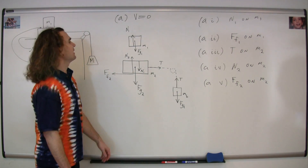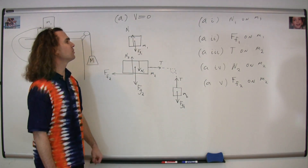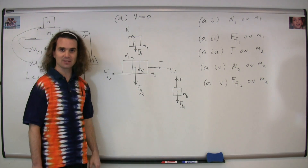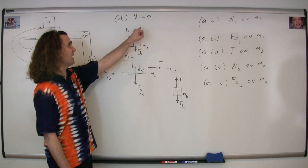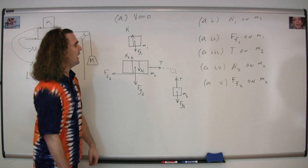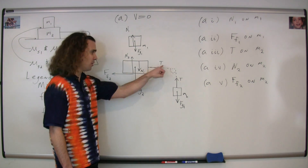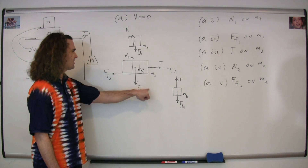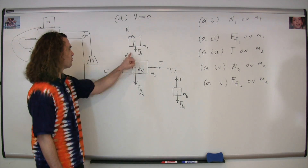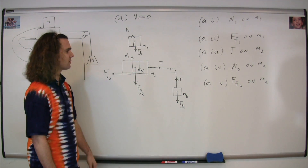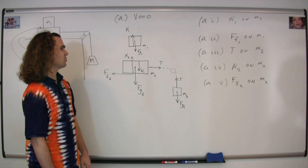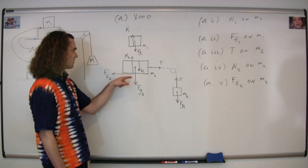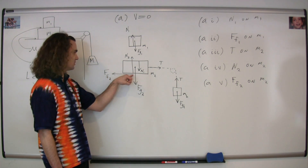Now that we've drawn our complete free body diagram, we can answer the individual questions. A-I: the normal force one on mass one is going to be on the bottom of mass one pushing upward — it's the interaction between mass two and mass one. The force of friction one on mass one: because it's at rest, there is no force of friction on mass one. A-III: the tension force on mass two is a pull by the string to the right, right where the string attaches to mass two. Normal force two is the interaction between the tabletop and mass two, pushing upward right at that surface. And A-V: the force of friction two on mass two — it opposes motion so it's to the left, because the tension force is trying to pull it to the right, and it is parallel to the surface at the interaction between mass two and the tabletop.